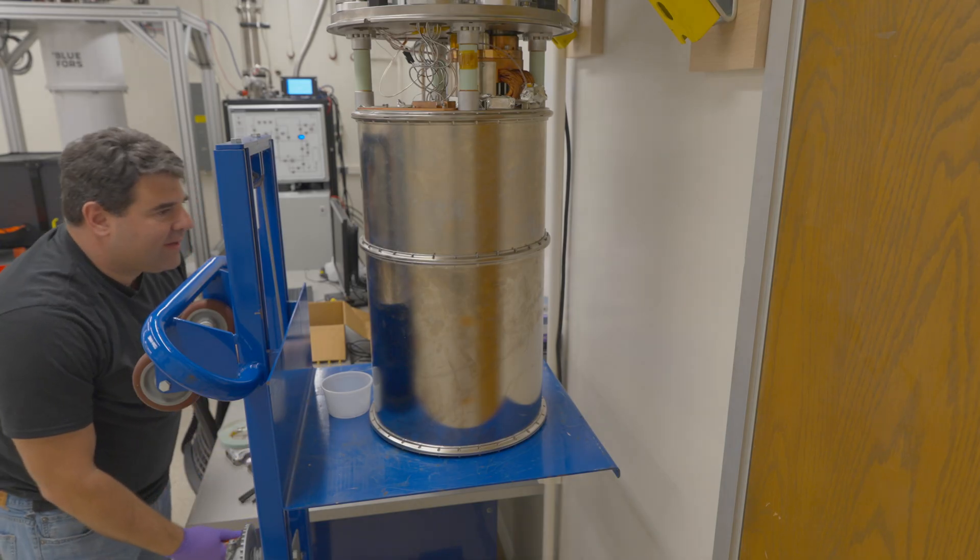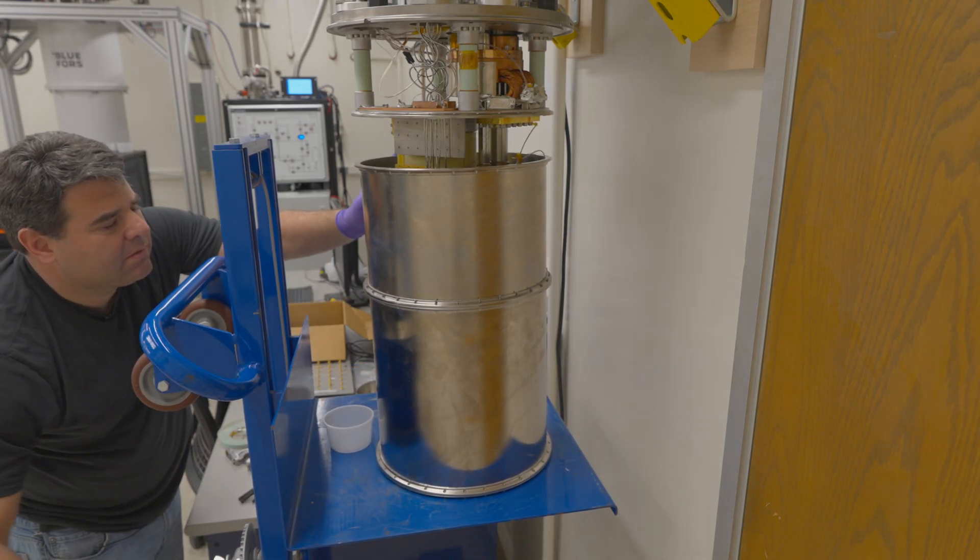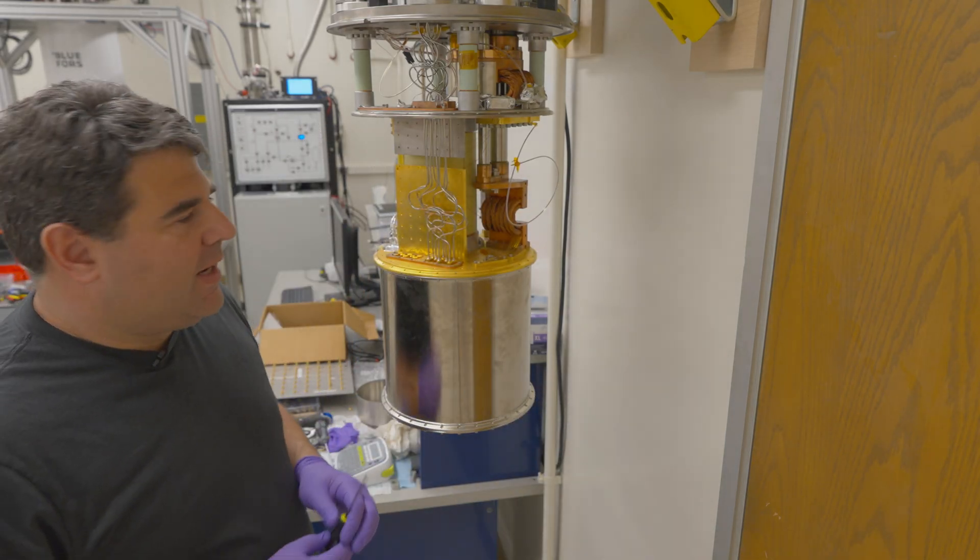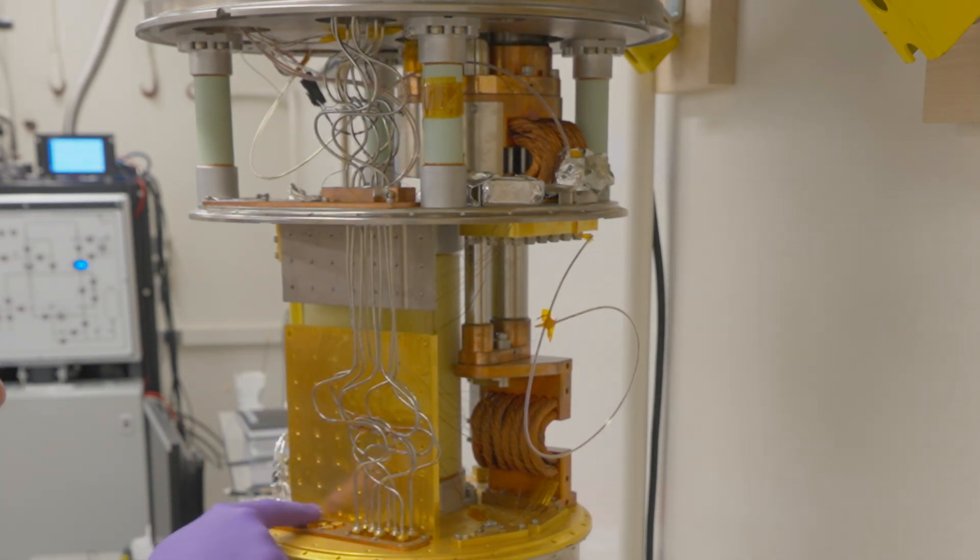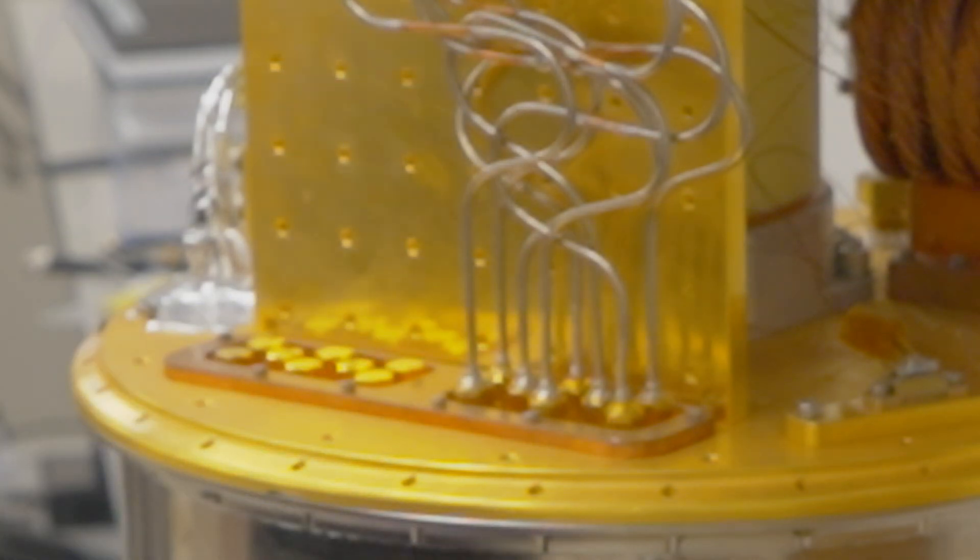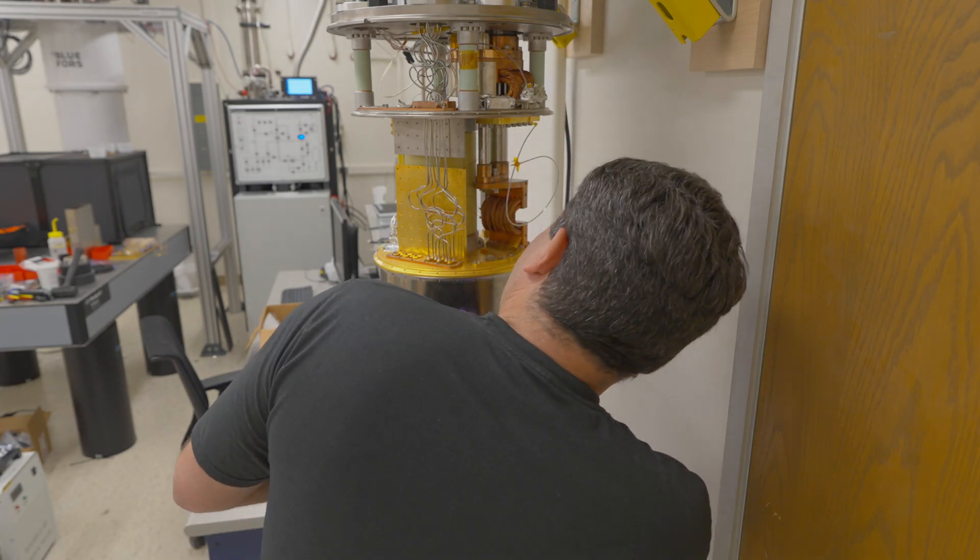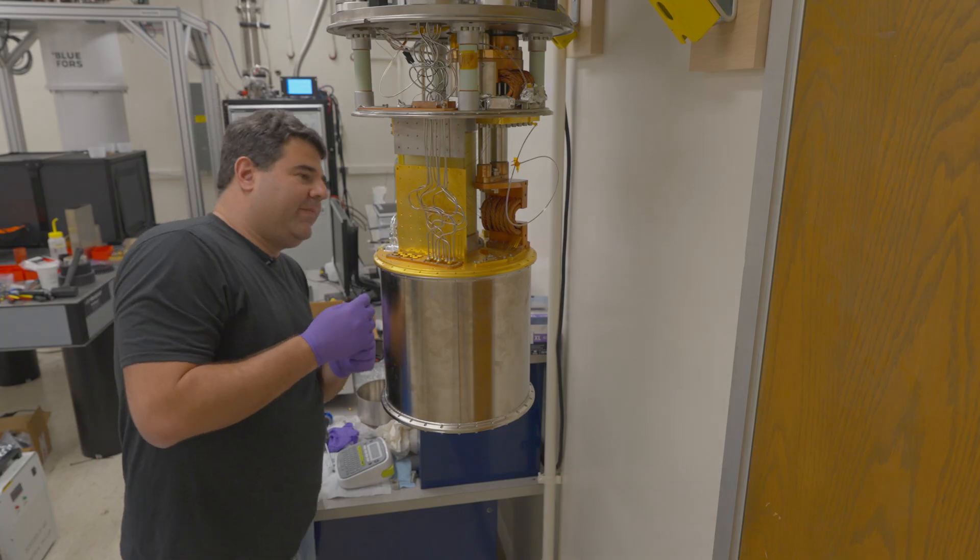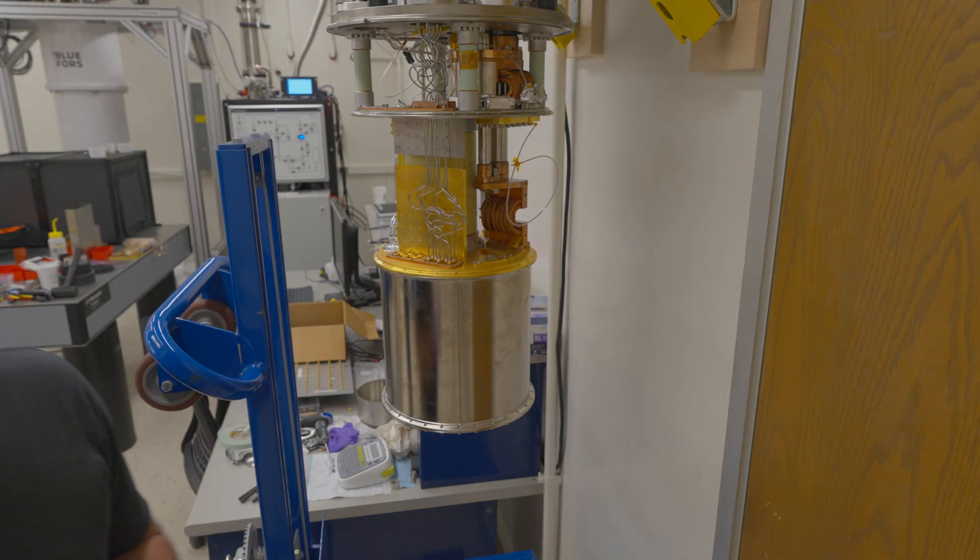All right, let's see what happens now. Removing the 50 Kelvin can. So on this one you'll see we've got the same coaxes coming down to four Kelvin. So we got eight coaxes to four Kelvin. You can see they built in a provision to put eight more in but never actually did it. Then there's this micro D connector that's coming through here bringing DC wiring in. Got the magnet wires here. Everything looks pretty stock up to this point.